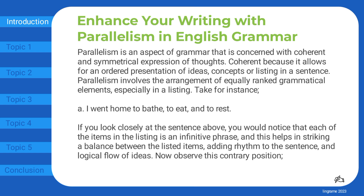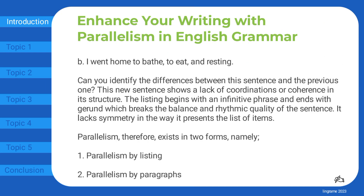Now observe this contrary position: I went home to bathe, to eat, and resting. Can you identify the differences between this sentence and the previous one? This new sentence shows a lack of coordination or coherence in its structure. The listing begins with an infinitive phrase and ends with a gerund, which breaks the balance and rhythmic quality of the sentence. It lacks symmetry in the way it presents the list of items.